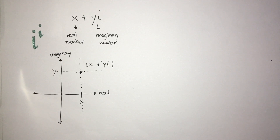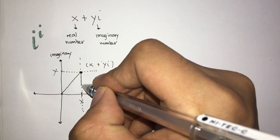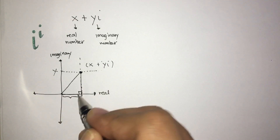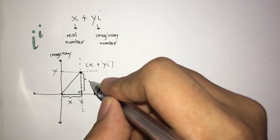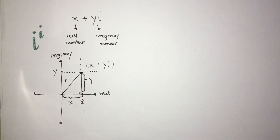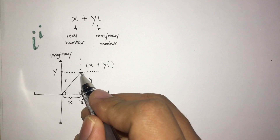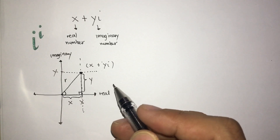Now we can explore more on this imaginary and real number representation by drawing a right triangle, wherein one leg has x units and the other has y units. We can represent the hypotenuse as r, and the angle formed between r and the reference real axis as theta.